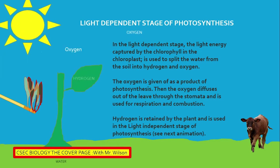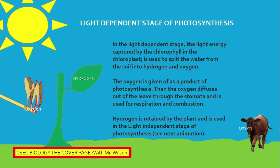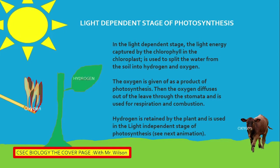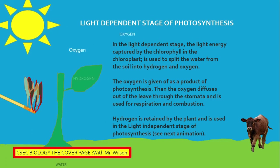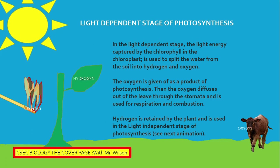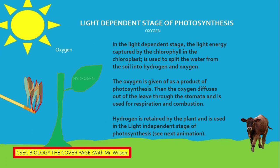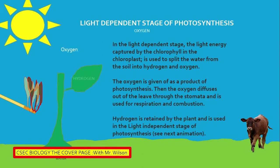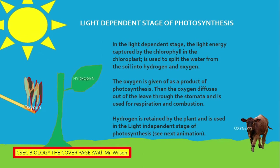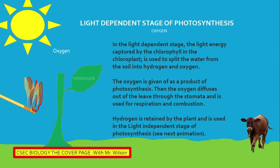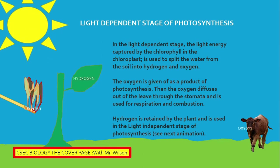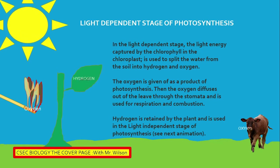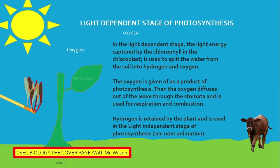In the light-dependent stage, the light energy is captured by chlorophyll in the chloroplast. It is used to split water molecules from the soil into hydrogen and oxygen. The oxygen is given off as a product of photosynthesis.